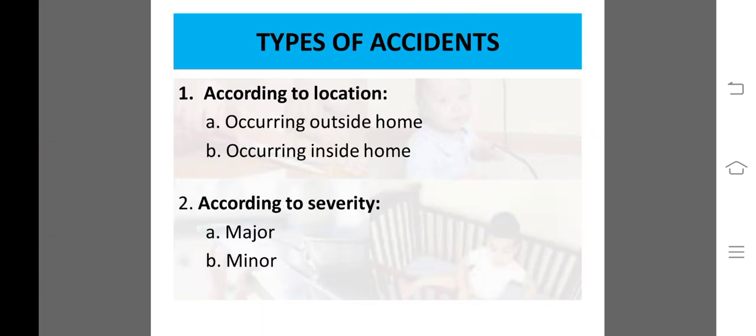Next are the types of accidents. یہ دو parts میں divide کیا گیا ہے: location اور severity۔ Location کے لحاظ سے، occurring outside the home میں road crossing accident، drowning from a swimming pool، sports-related injury، اور bicycle، skateboard، یا scooter use کرتے ہوئے head injury شامل ہے۔ Playground کے باہر fall from playground equipment بھی بچے کو injury دے سکتا ہے۔